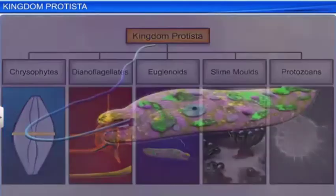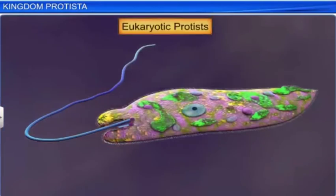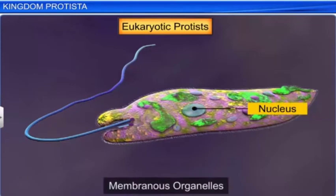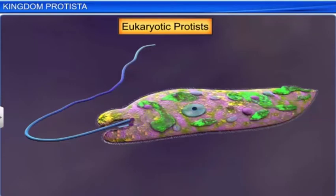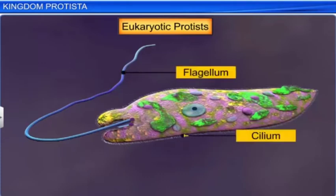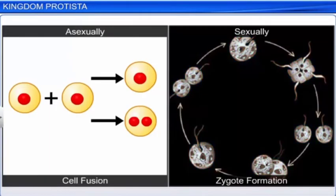Since they all are eukaryotes, they contain a well-defined nucleus and other membranous organelles. Some Protists have a flagellum or a cilium. They reproduce asexually by cell fusion and sexually by zygote formation.